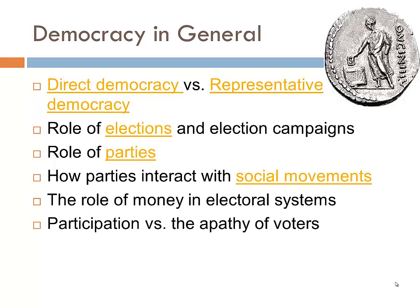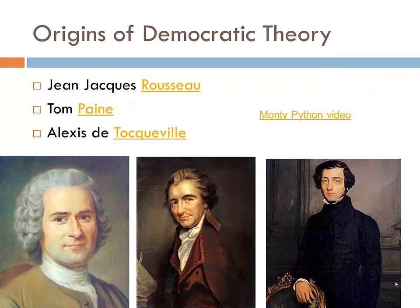In all democratic theory, there's quite a lot of consideration of the role of elections and election campaigns, the role of parties, how parties interact with social movements, what's the role of money and economic power in electoral systems, and what causes rises and declines in voter participation or voter apathy. Three important figures in democratic theory are Jean-Jacques Rousseau, Thomas Paine, and Alexei de Tocqueville. Rousseau was the first to talk about the popular will and was considered one of the fathers of the French Revolution. Thomas Paine was a key pamphleteer at the time of the American Revolution who wrote very much about popular sovereignty, pretty much in the same tradition as Rousseau.